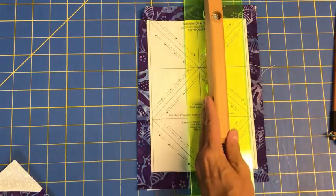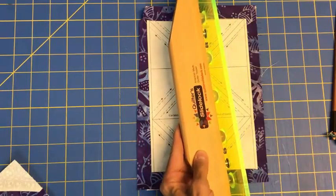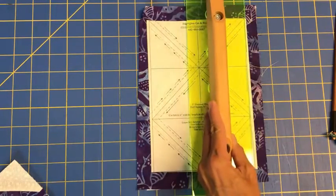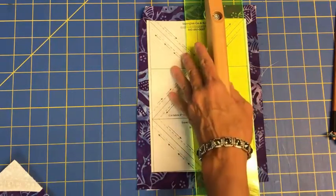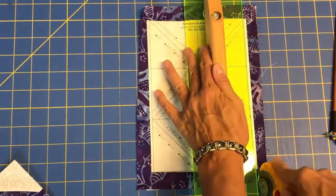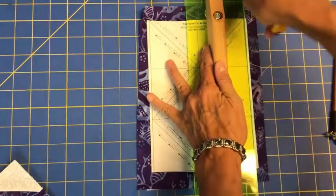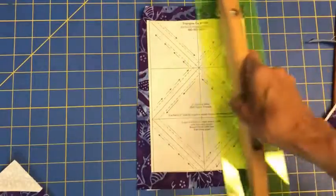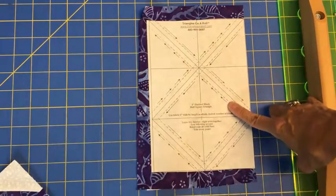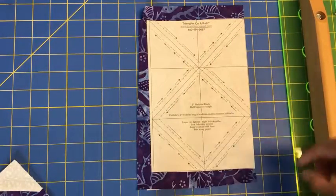This is called a quilter slide lock, and it's just thicker, and it has this nice big substantial handle, which I really love for this type of work. So I am simply going to cut on the solid lines. Remember, I sewed on the dotted line. Now I'm going to cut on the solid line.